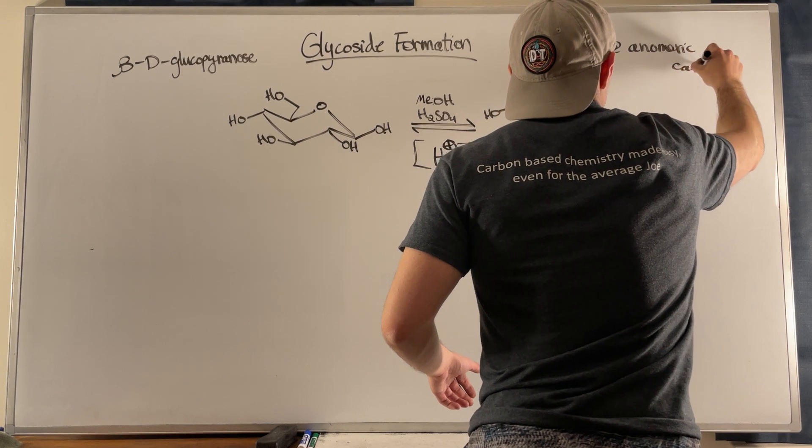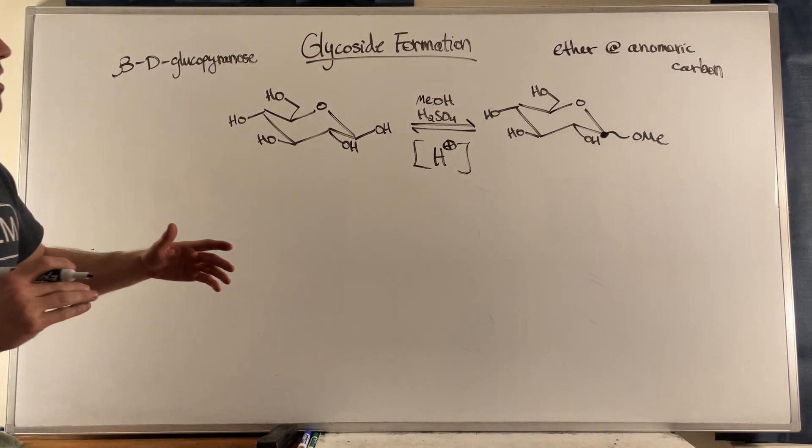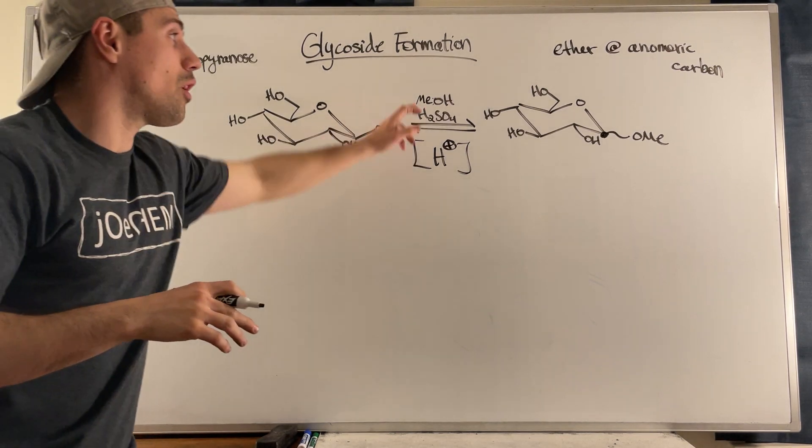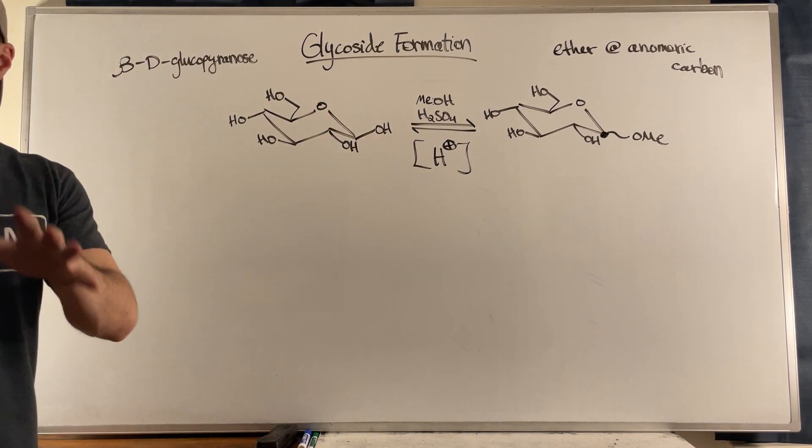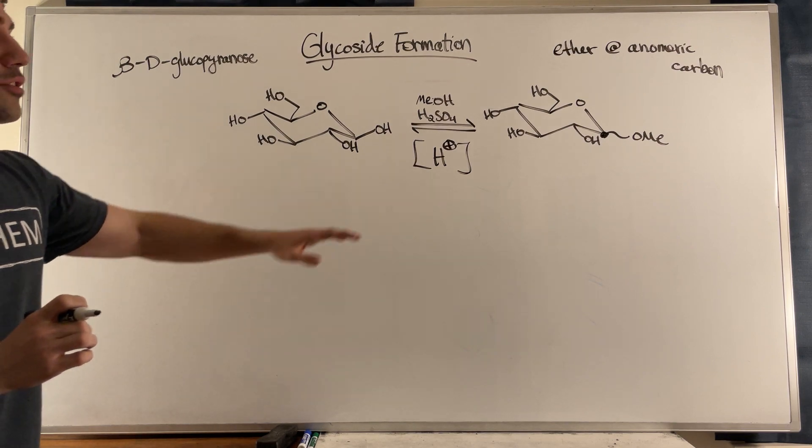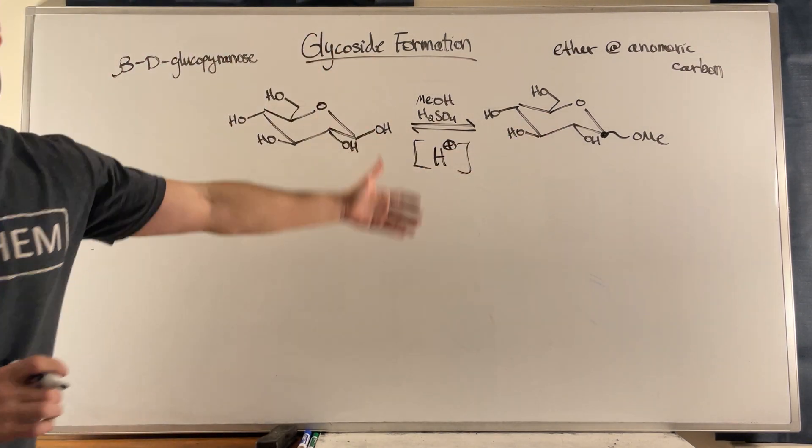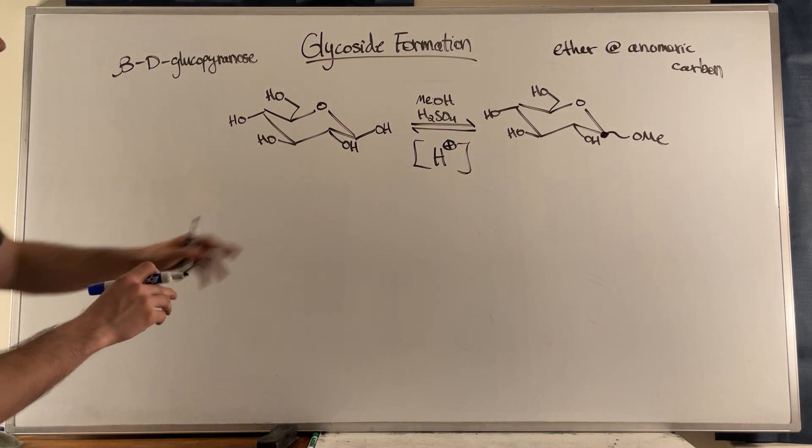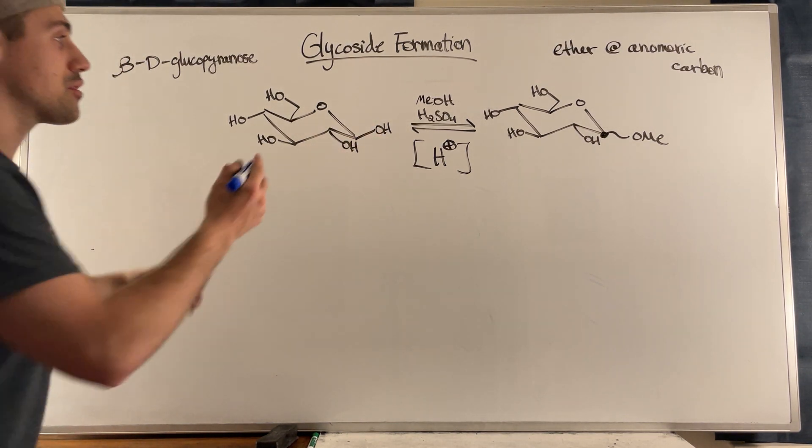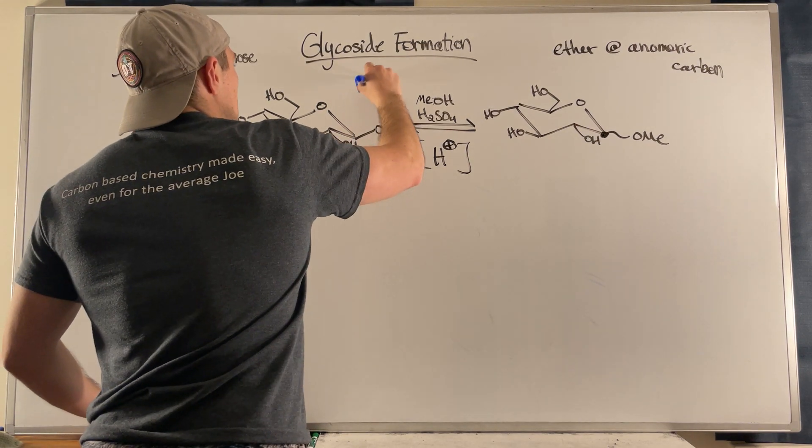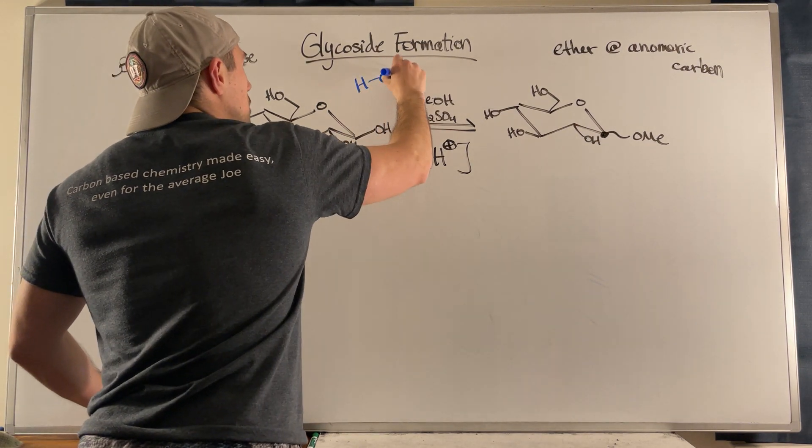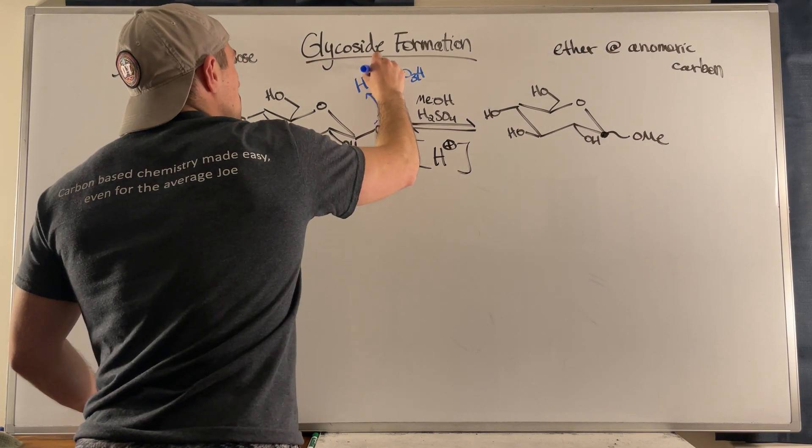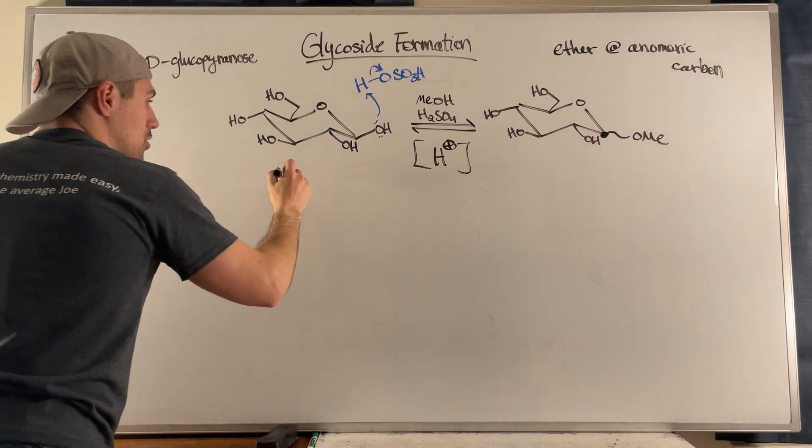And the thing is, is that when you have acidic conditions, this will continue to kind of swap in with whatever type of alcohol or whatever you have available to it. And I want to show you how this works mechanistically and also show you the names we can apply to these glycosides. So as I think you would, you're unsurprised to see because we have this thing leave, the very first step of this mechanism is that that oxygen is protonated because we want to protonate the things we want to leave. So I'm going to cheat a little bit due to whiteboard real estate.